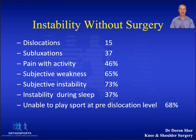There was another study by Hervelius who looked at the natural history of shoulder injury over 20 years. From his study we know that you are much more likely to end up with arthritis in your shoulder if you have had two or more dislocations.